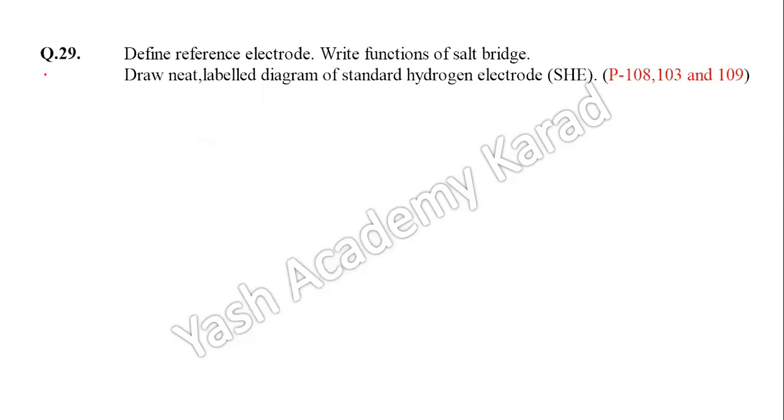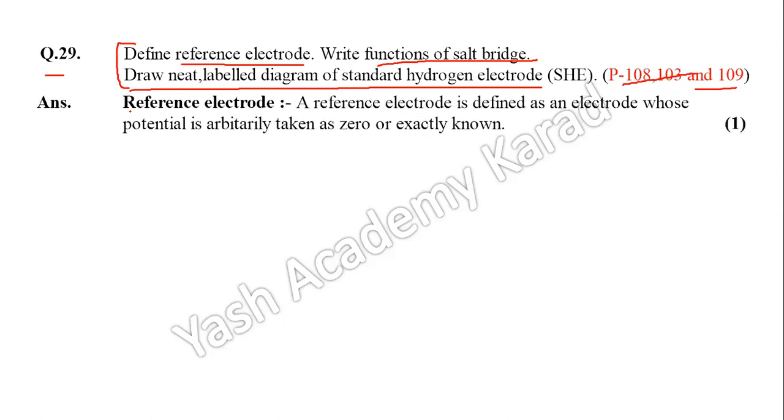Question number 39: Define a reference electrode. Write the functions of salt bridge and draw a neat level diagram of standard hydrogen electrode. Page number 108, 103, 109. The reference electrode is defined as an electrode whose potential is arbitrarily taken as zero or exactly known. It carries one mark.